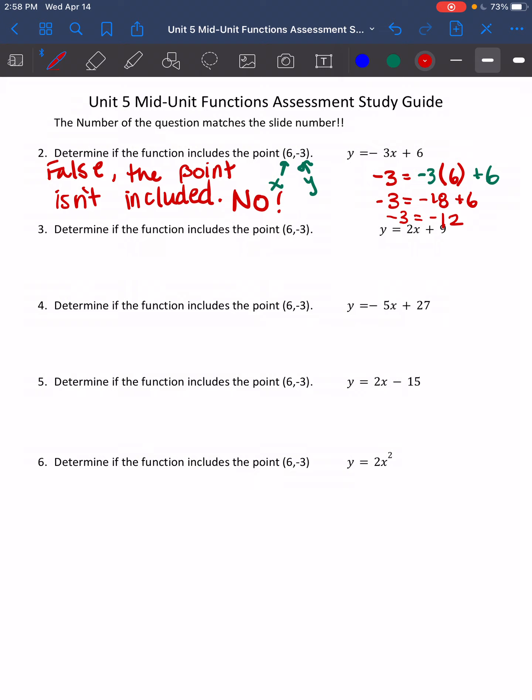Or the option on Desmos is no. Let's try another one. Let's do number five. I'm going to do the same thing for 6 and 3. I know from before, 6 is my x value, negative 3 is my y value.